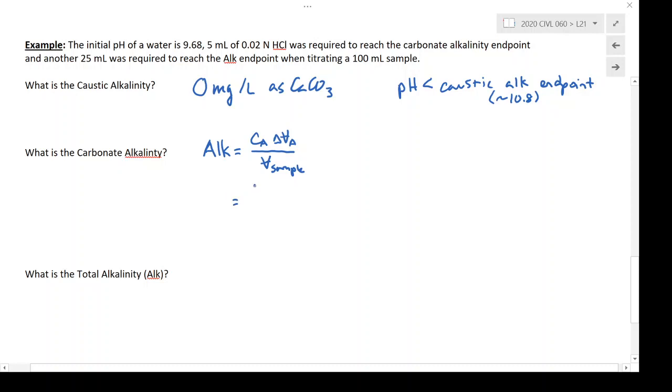And here our acid concentration is 0.02 normal, the amount of acid we added was 5 mils, and our sample volume is 100 mils. So this is going to give me an answer of